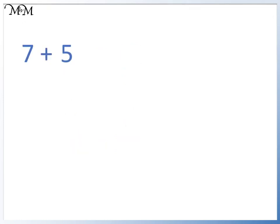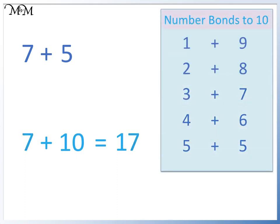Finally, we have 7 plus 5. 7 plus 10 equals 17. Looking at our number bonds, 5 is 5 less than 10. We subtract 5 from 17 to get 12.